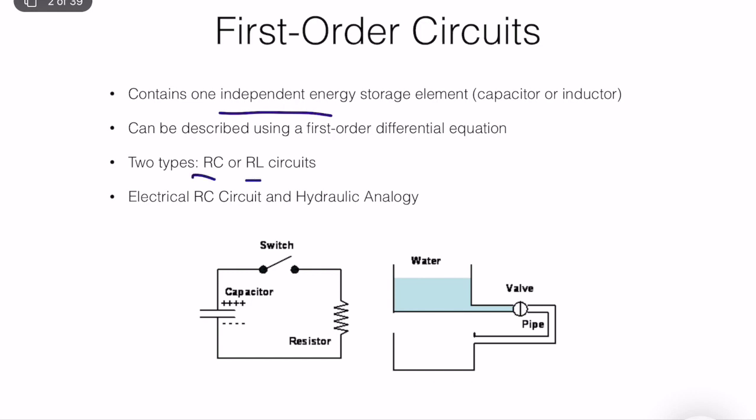RC and RL circuits — one is a capacitor and resistor, and the other is a resistor and inductor. First-order circuits are important for electrical systems, but in general you can see analogues of first-order and higher-order circuits in other systems such as hydraulic systems, mechanical systems — they're kind of everywhere. We can model these different systems using the same language, which is technically differential equations.